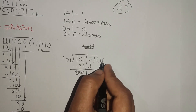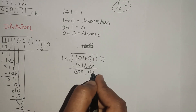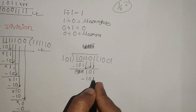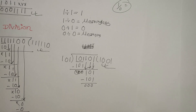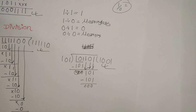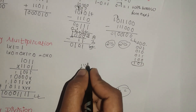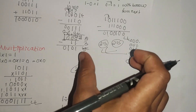This is the answer. In binary number system, we have covered addition, subtraction, multiplication, and division. In the case of binary subtraction, we use 1's complement and 2's complement. This will be shown in the next video.